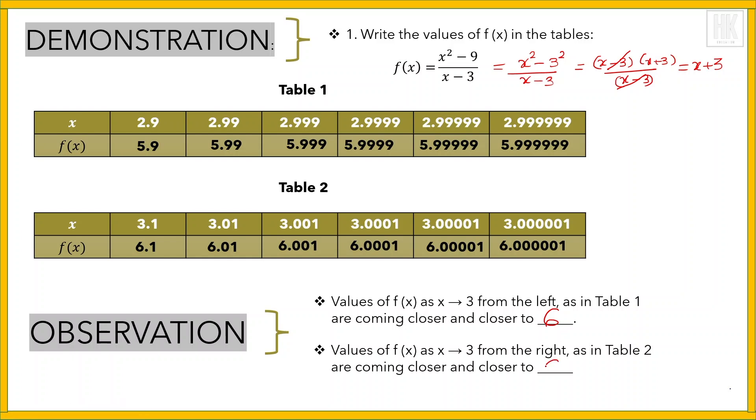the limit as x approaches 3 of (x² - 9)/(x - 3) equals 6. So the value of the limit is 6.